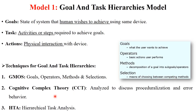The second technique is Cognitive Complexity Theory, that is CCT. This technique analyzes the proceduralization and error behavior — it analyzes all the errors that will be generated in the future and solves them. The third technique is Hierarchical Task Analysis, which will be explained in a separate model. These are the 3 techniques used in the Goal and Task Hierarchy Model.